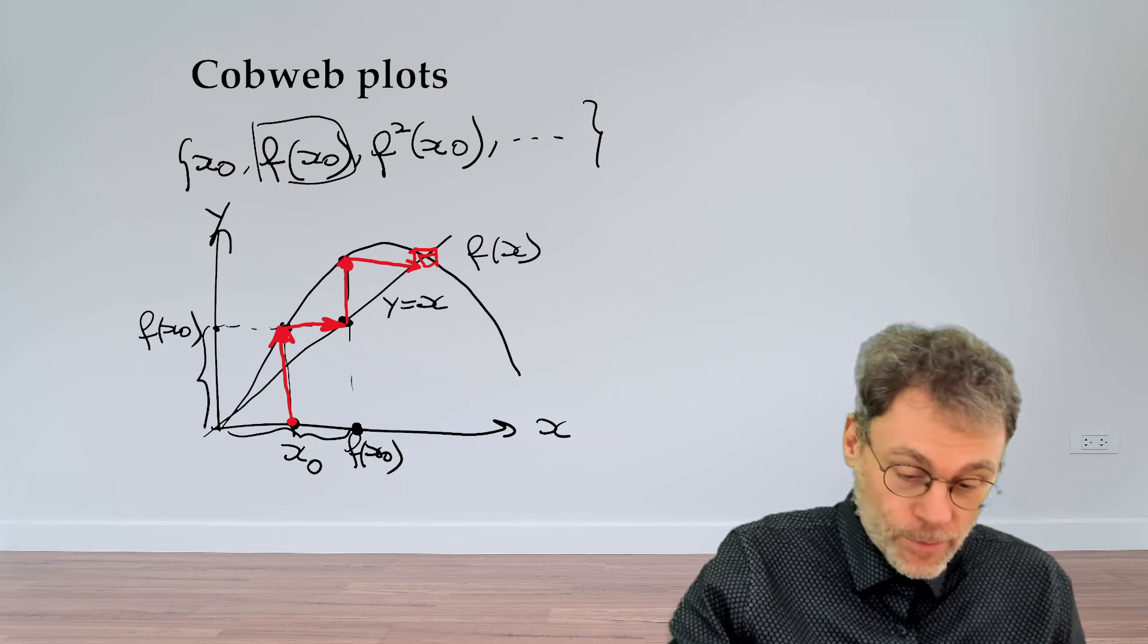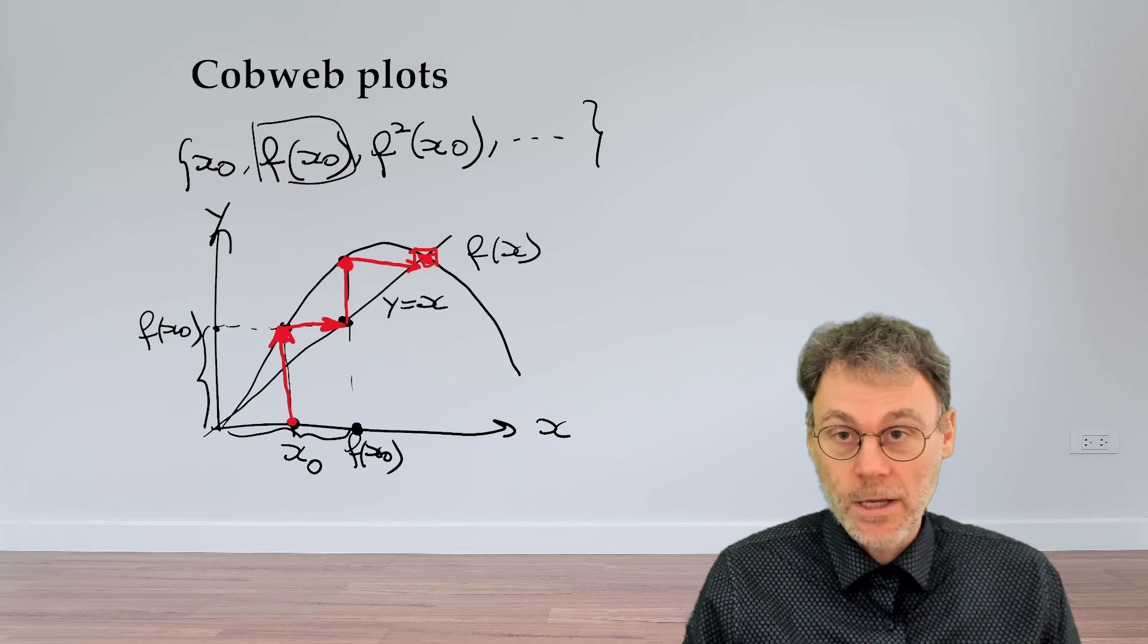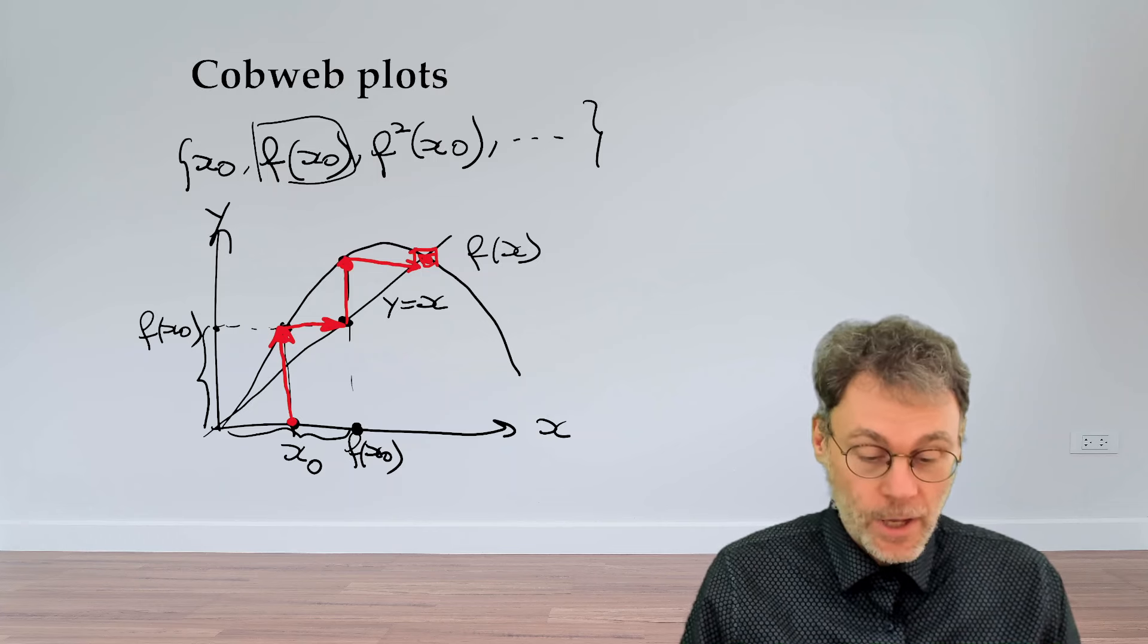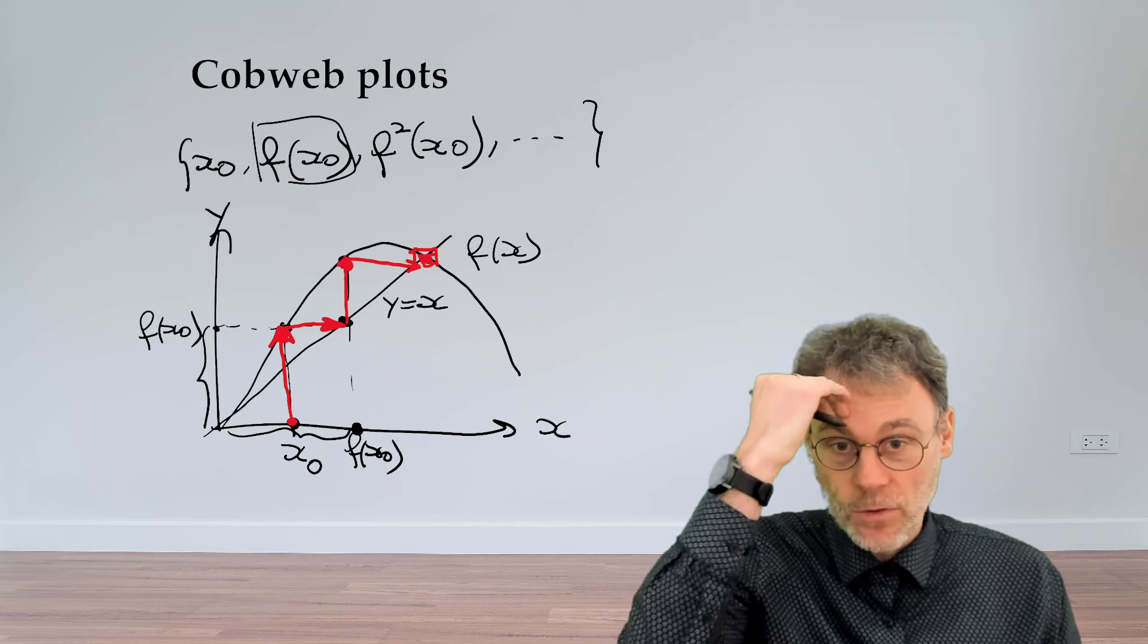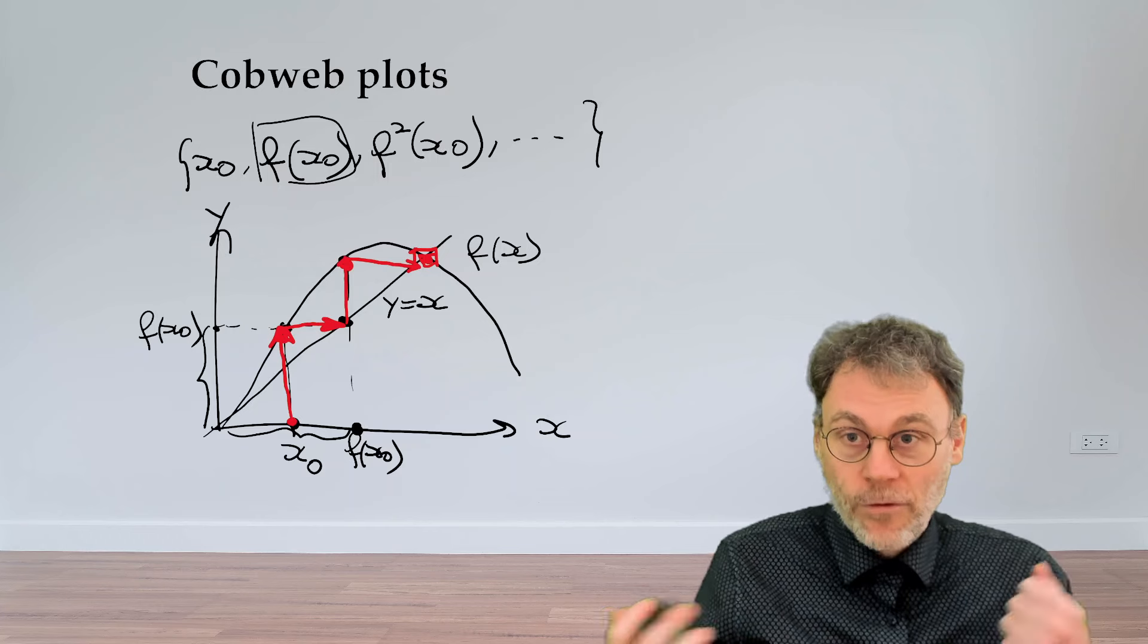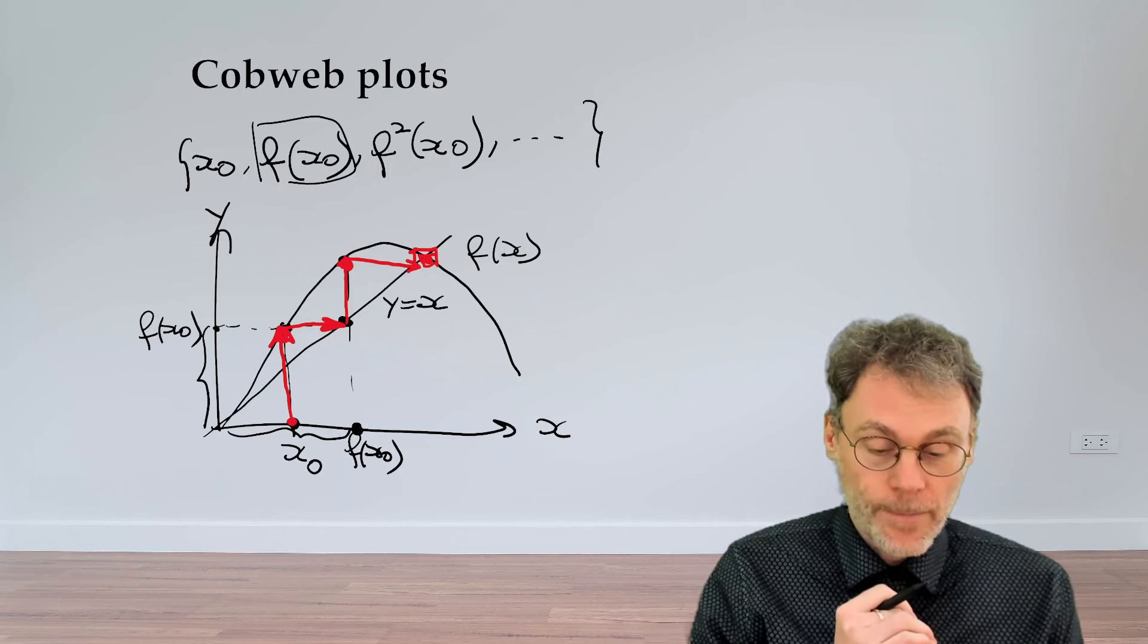And then you see in the end, you end up here at this intersection between f of x and the line y is equal to x. So this is where your orbit will end up. It will end up in this intersection between these lines. So this is a graphical way of helping you visualize where an orbit will end up.